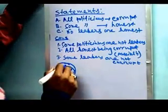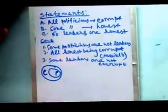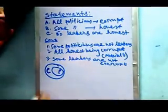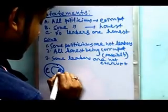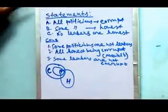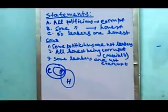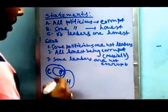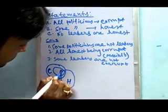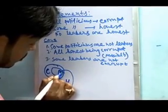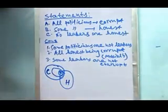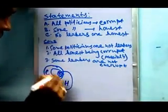Now, Statement B: some politicians are honest. Since it's about some politicians, the honest section — denoted as H — partially overlaps with the politicians circle. This particular segment is within the politicians part.